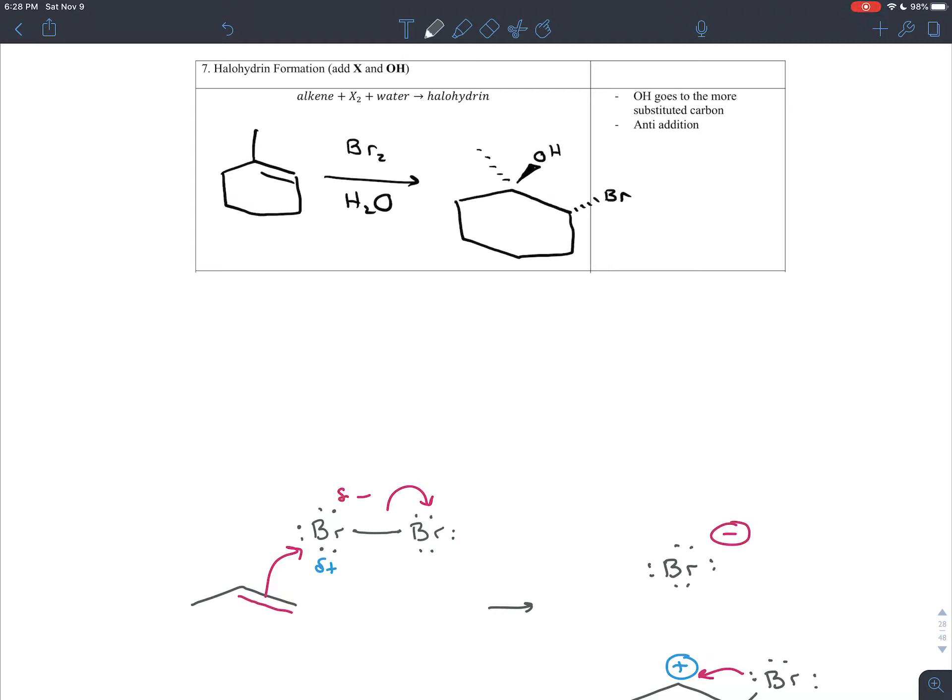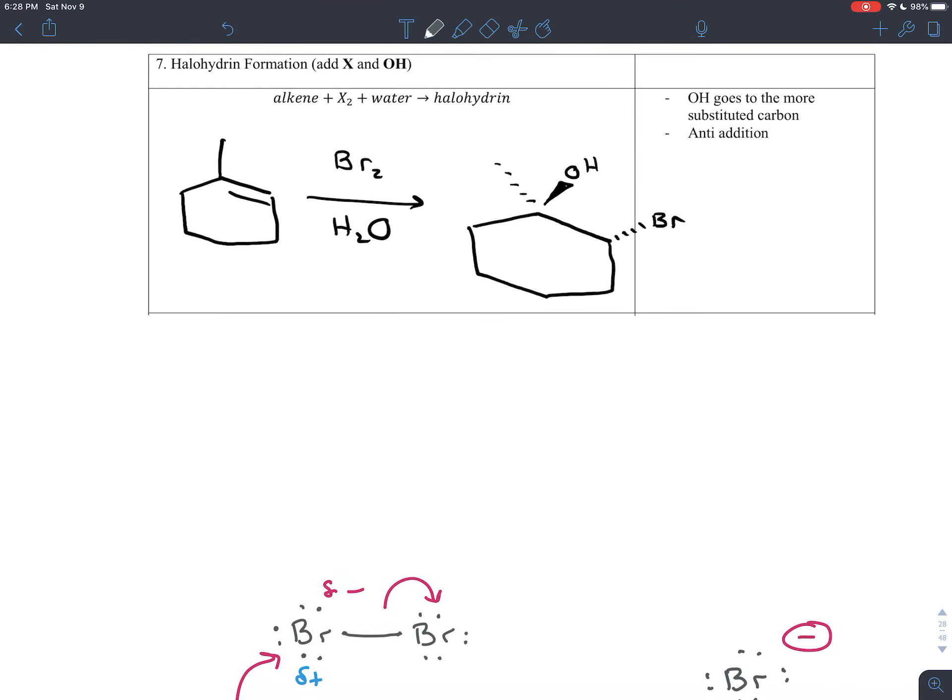Halohydrin formation is very similar to halogenation. Even the recipe is very similar. You add a halogen - here I'm using bromine but it could just as well be chlorine or iodine. That's the halo part of halohydrin formation.